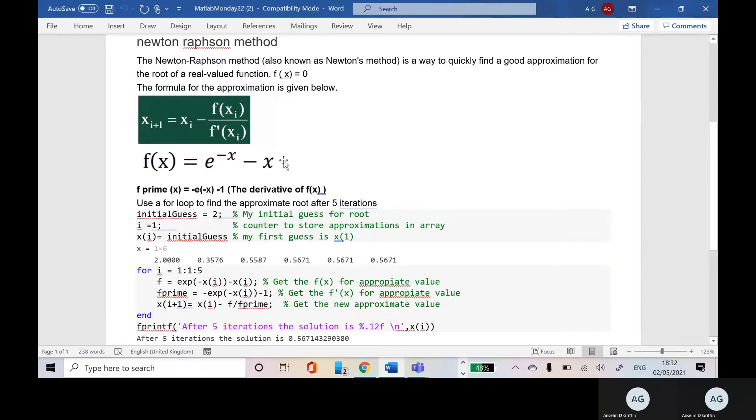I chose this rather simple example where the function is e to the minus x minus x, and then f prime, the differentiation of that, would be minus e to the minus x minus 1. Differentiate minus x minus 1. And I suppose that should be like that, ever so slightly clear.